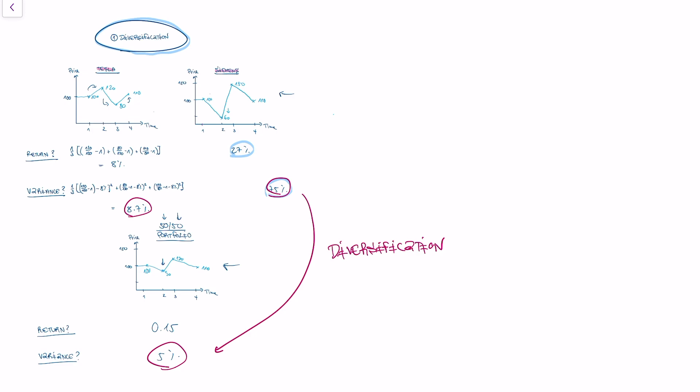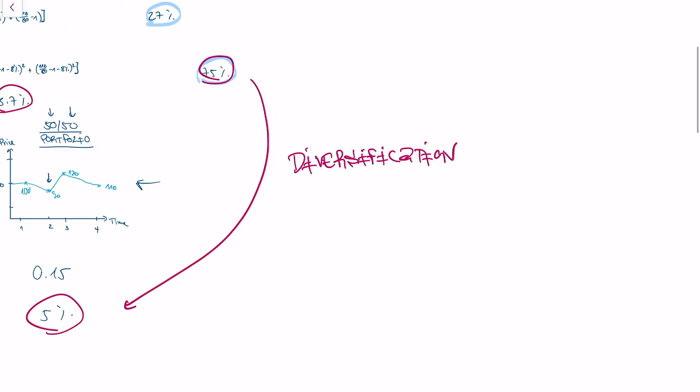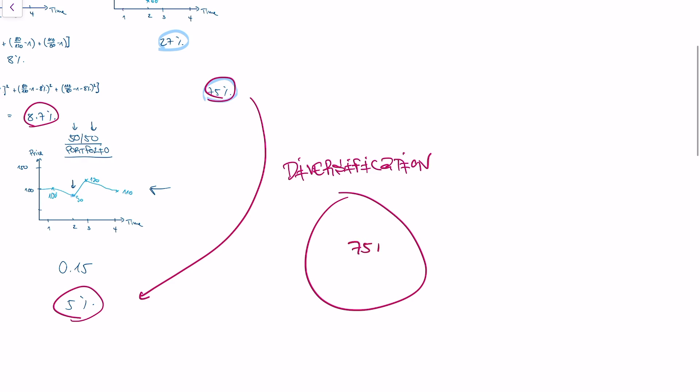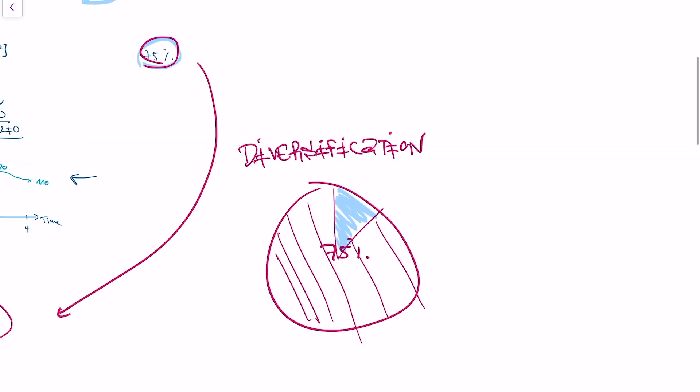So what that means is if we have our stock, so this is the variance of the Siemens stock, which is 75%, then our Siemens stock does not have 75% of variance when it's part of the portfolio, because a lot of the variance is absorbed by the Tesla stock. So in a portfolio, only a small portion of the variance is relevant. So this blue portion is the relevant variance in the portfolio.